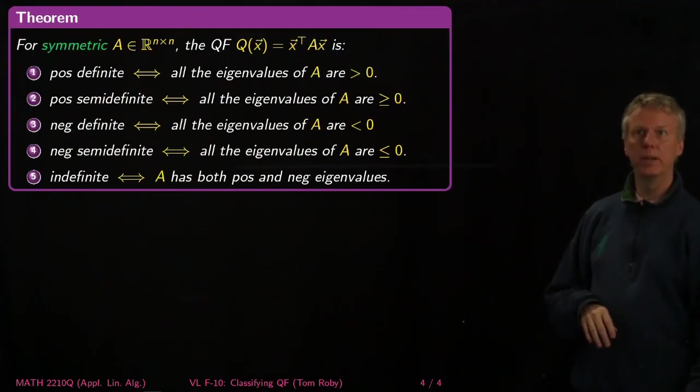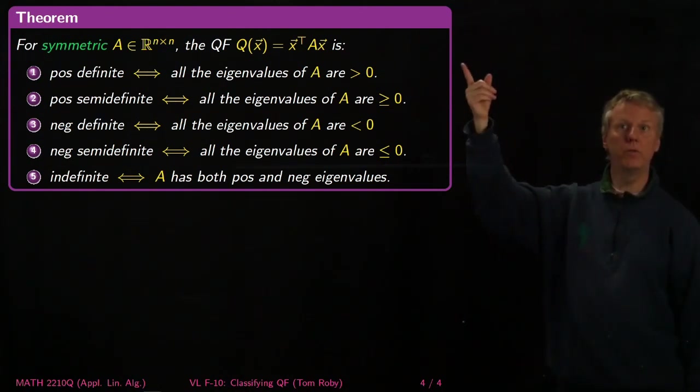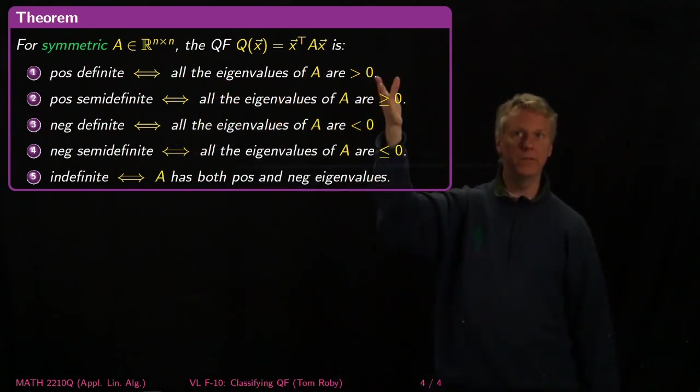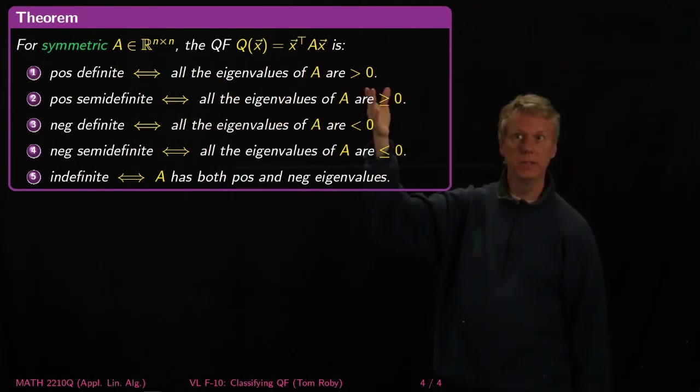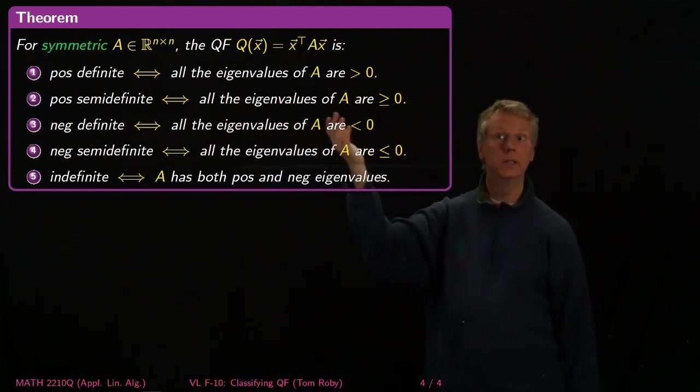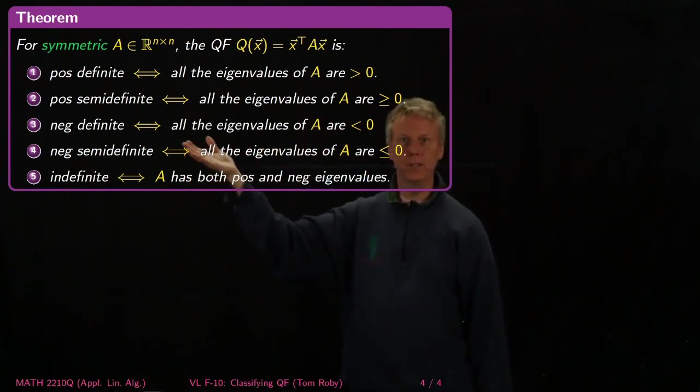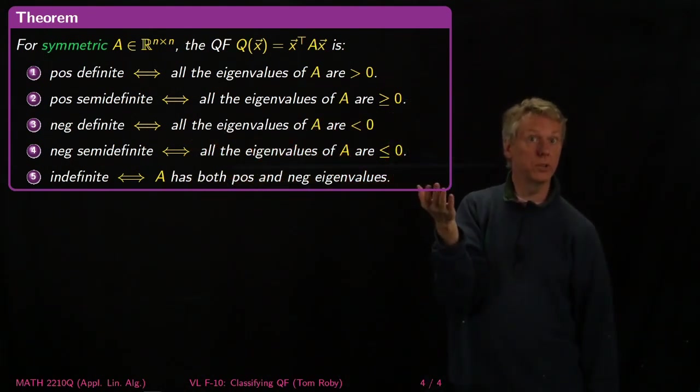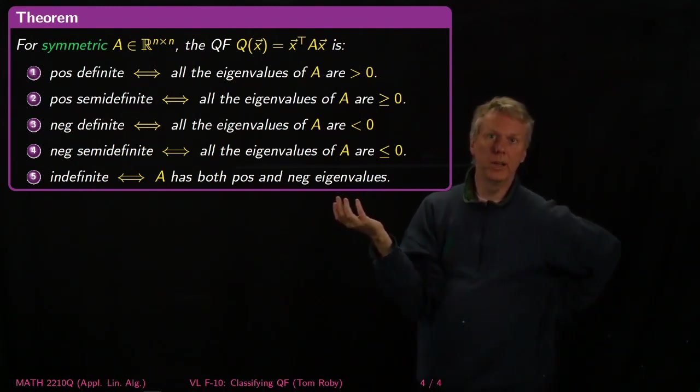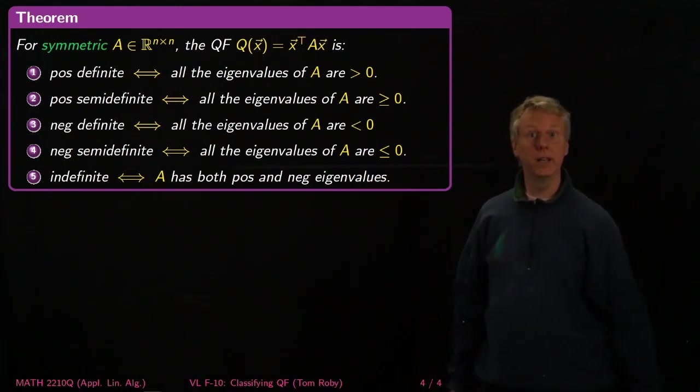Here's the theorem. If I have a symmetric matrix, then I can classify the quadratic form corresponding to it. It's positive definite if all of its eigenvalues are positive. It's positive semi-definite if all eigenvalues are non-negative. It's negative definite if all eigenvalues are negative. It's negative semi-definite if all eigenvalues are less than or equal to zero.